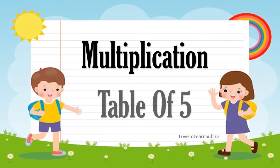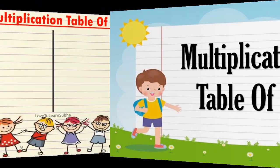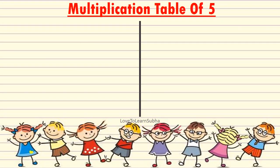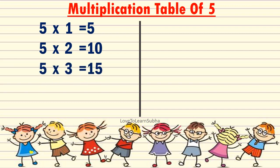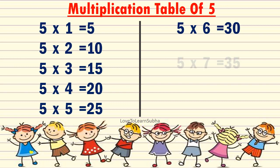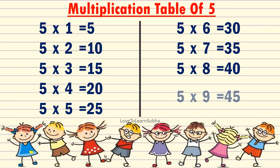Multiplication table of 5: 5 1s are 5, 5 2s are 10, 5 3s are 15, 5 4s are 20, 5 5s are 25, 5 6s are 30, 5 7s are 35, 5 8s are 40, 5 9s are 45, 5 10s are 50.